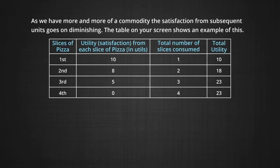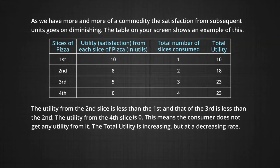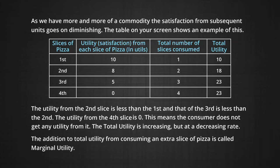This brings us to the conclusion that as we have more and more of a commodity, the satisfaction from each subsequent unit goes on diminishing. The table on your screen shows an example of this. Notice the utility from the second slice is less than that from the first, and that of the third slice is even less than that of the second. The utility from the fourth slice of pizza is actually zero, meaning the consumer does not get any utility from it. The total utility is increasing, but it is increasing at a decreasing rate. The addition to total utility from consuming an extra slice of pizza is called marginal utility.